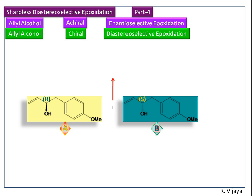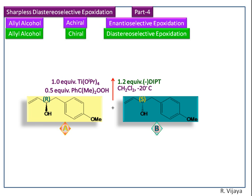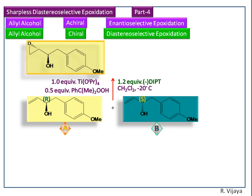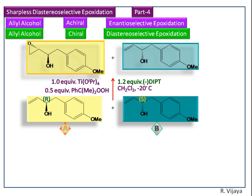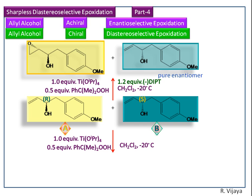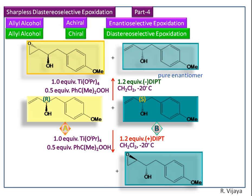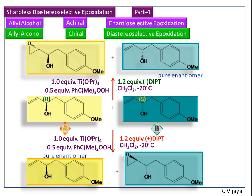We are adding the Sharpless epoxidizing agent: titanium isopropoxide and a substituted peroxide. Specifically, we are adding (-)-DAPT. When we add (-)-DAPT, we get only the epoxides of the A-enantiomer and unreacted pure B-enantiomer. When we replace (-)-DAPT with (+)-DAPT, we get the epoxides of the B-enantiomer and unreacted pure A-enantiomer.